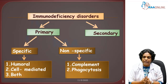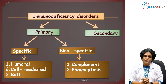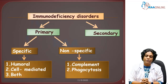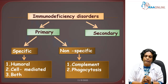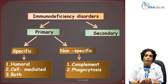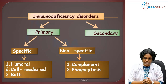All these can lead to secondary immunodeficiency disorders. Primary immunodeficiency disorder is again classified into specific immunodeficiency and non-specific immunodeficiency disorders. Specific immunodeficiency disorders are associated with deficiencies in humoral immune response, cell-mediated immune response, or both humoral and cell-mediated immune response.